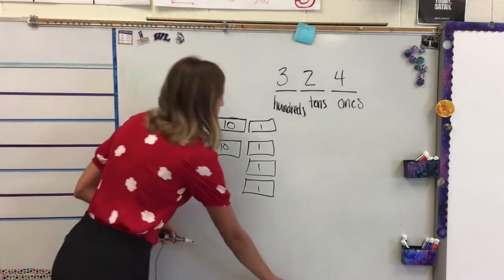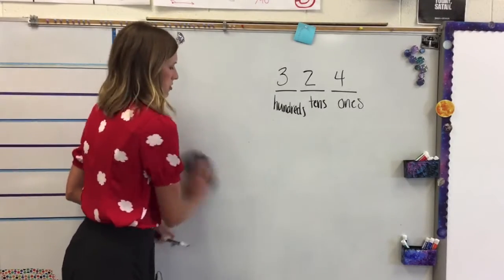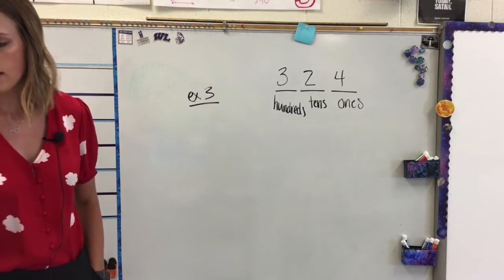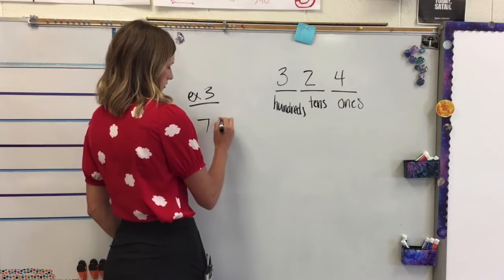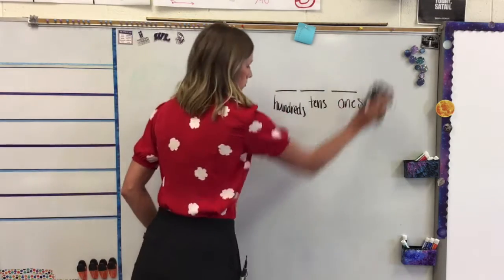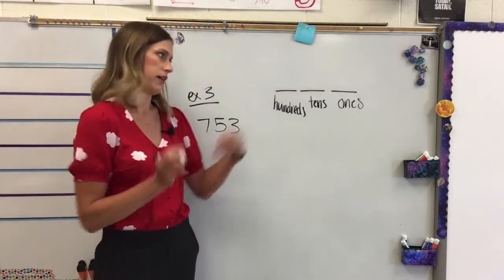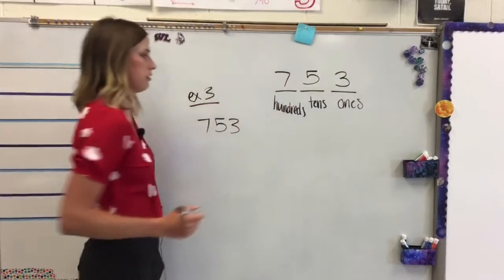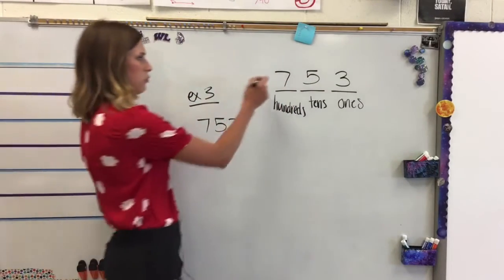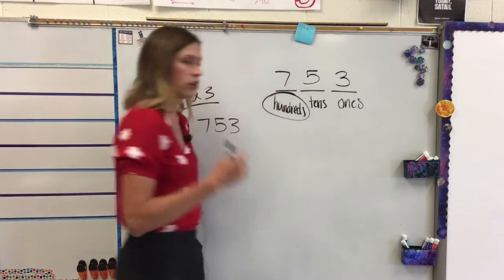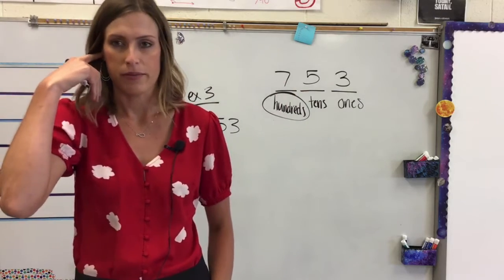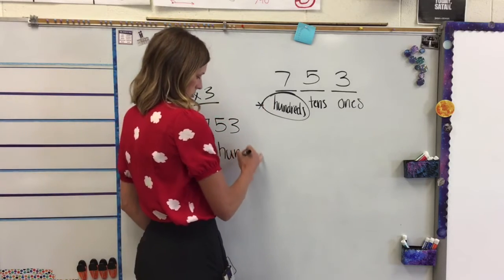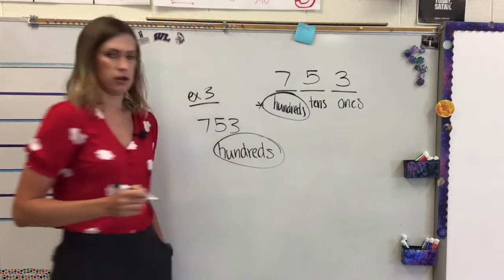Example three is going to look more at place value. Example three says: digit seven is in what place in seven hundred fifty-three? If we put this number in our place value chart, we start with the ones digit — three goes here, five's right in front of it, seven's right there. So digit seven is in the hundreds place. You can hear it when you say the number: seven hundred fifty-three, you've got hundred right after it, so it tells us that seven is in the hundreds place. Your answer for example three: write hundreds, in the hundreds place.